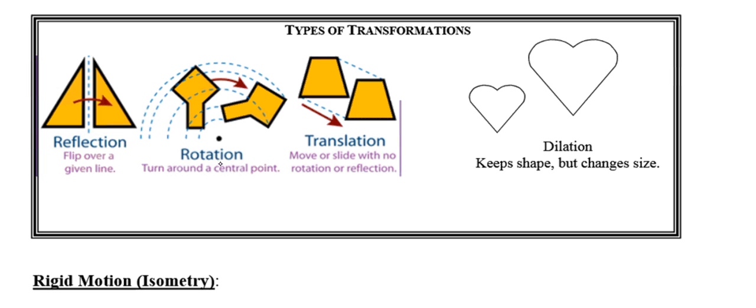Now because the reflection, the rotation, and the translation all result in images that are the same size as the original figure, these guys are known or called rigid motions. And this whole idea of rigid motion is so important that it has not just one name but two. So rigid motions are also named or known as isometries.